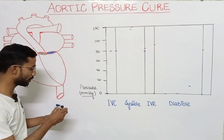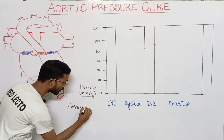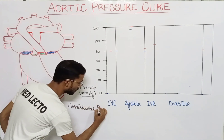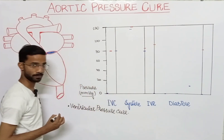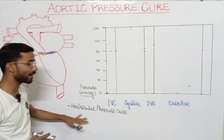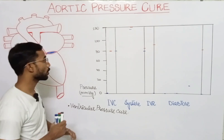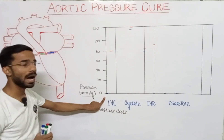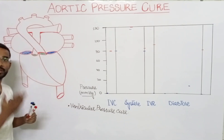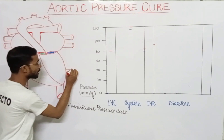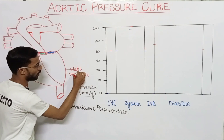First we will discuss the ventricular pressure curve, and after that we will compare it with the aortic pressure curve so you can easily understand. We will discuss the left ventricle specifically, as there are two atria and two ventricles.